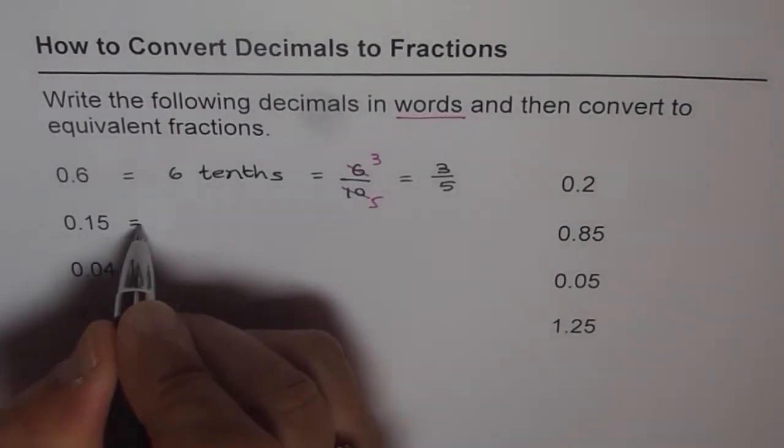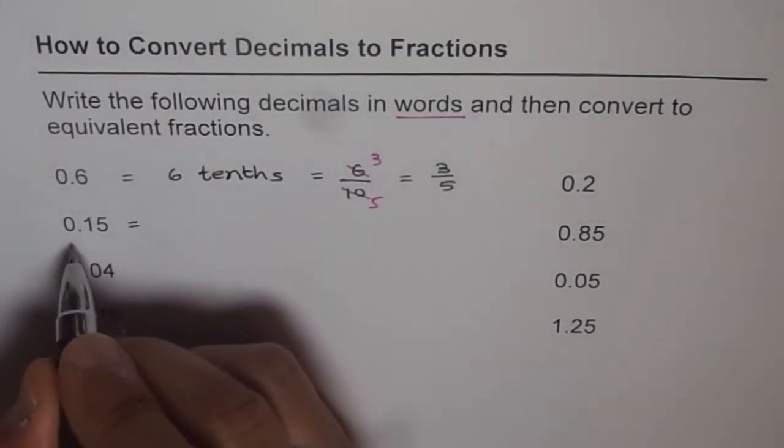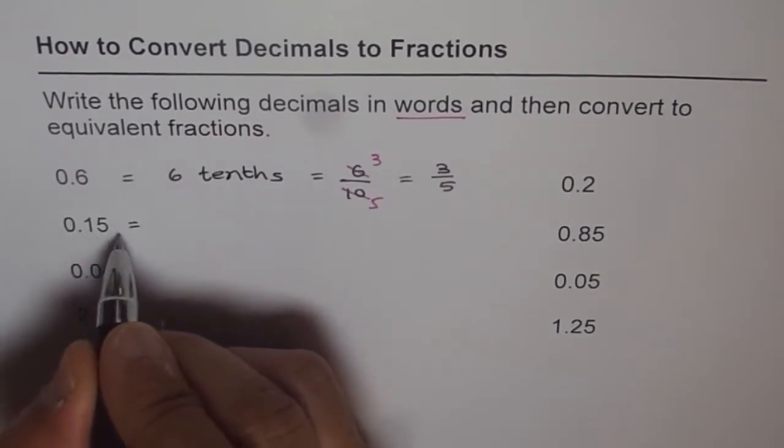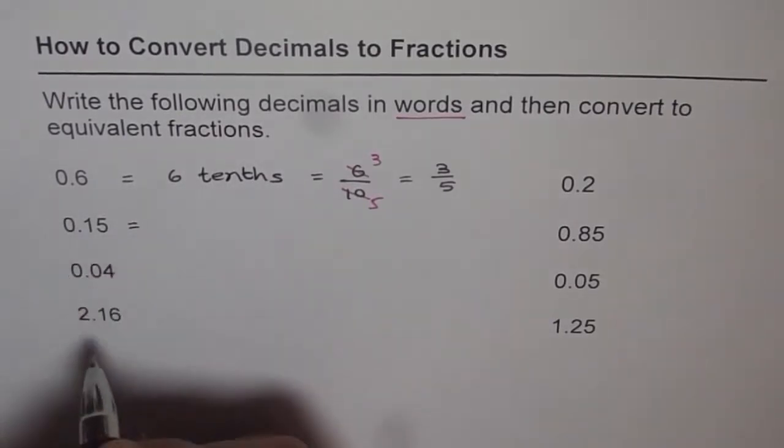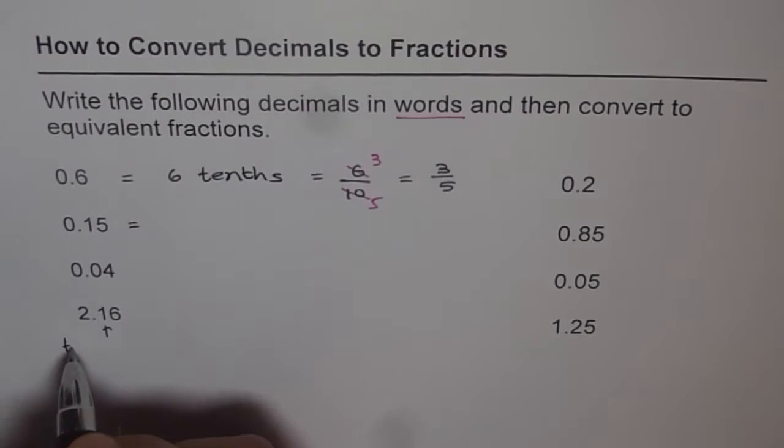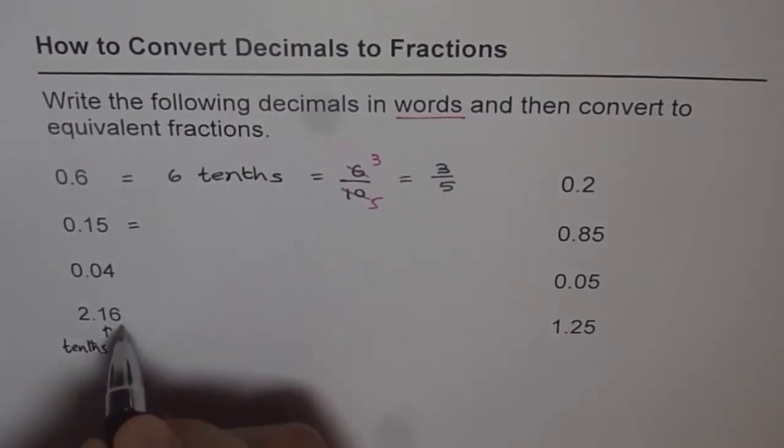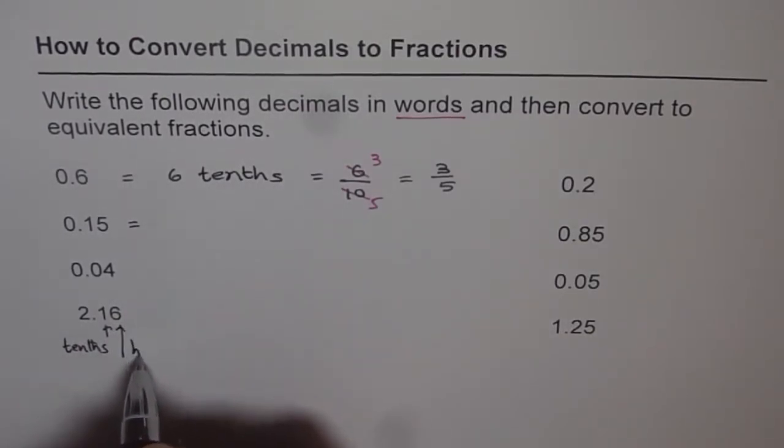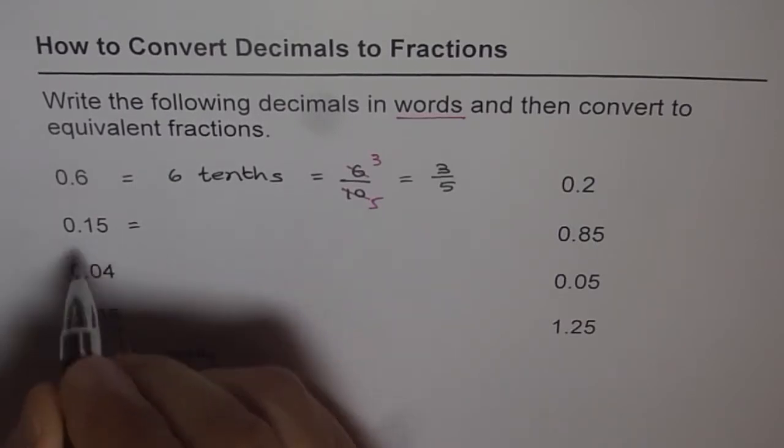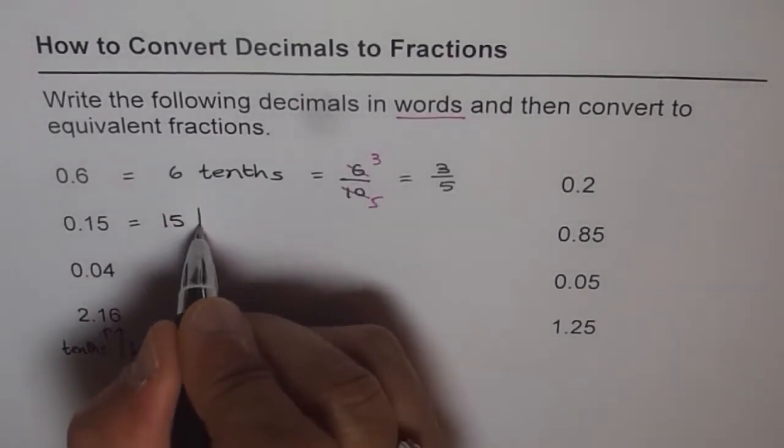Let's do one more. Now 0.15 is 0 and 15 hundredths. This is which place? Tenths. And this place is hundredths. So it is 15 hundredths.